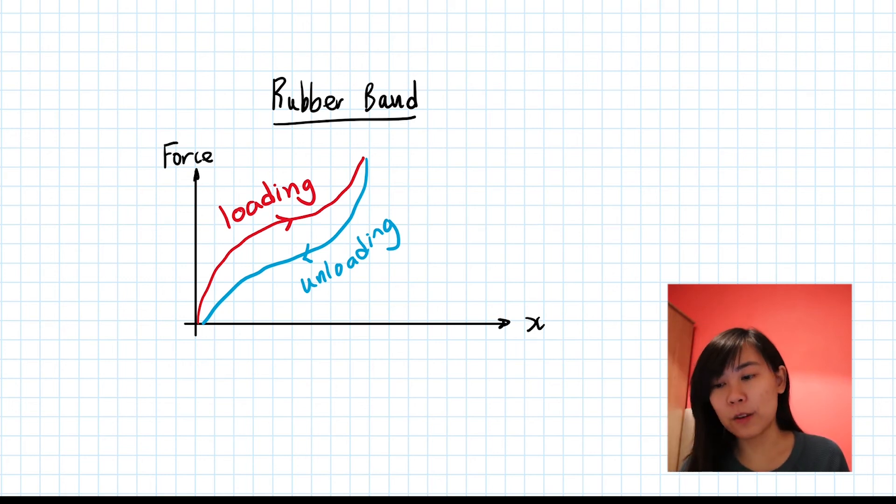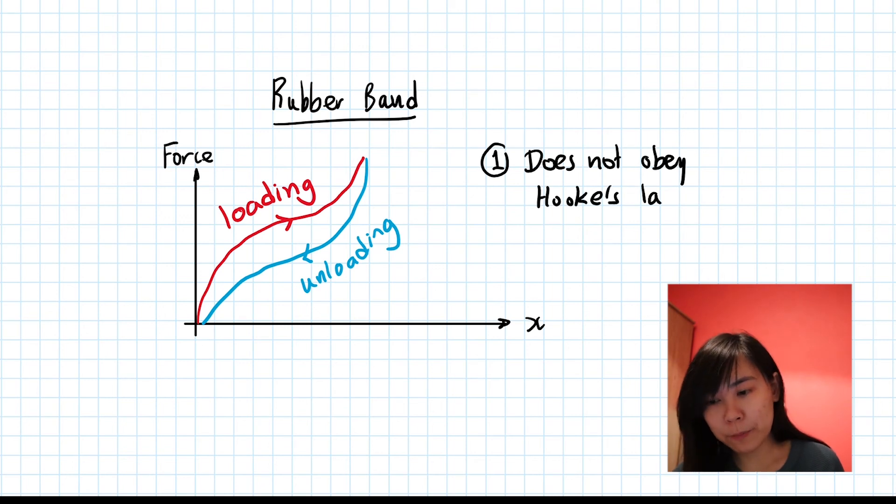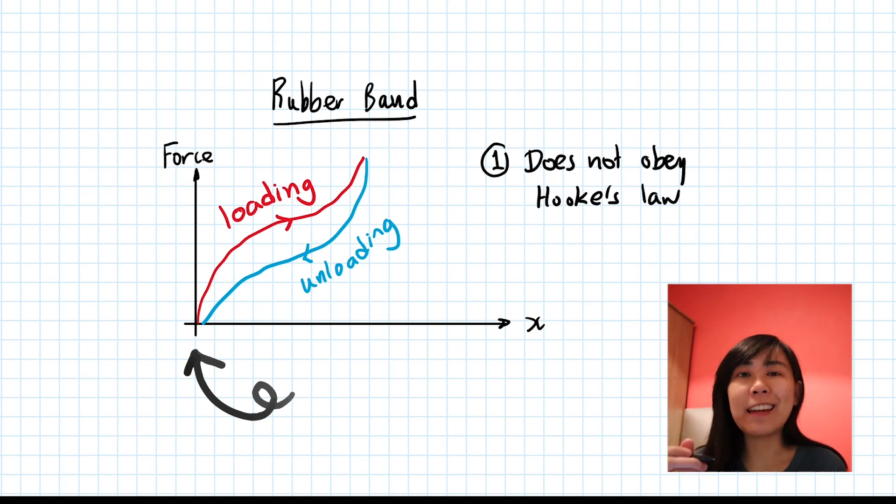There are two main things we can deduce from this graph. First of all, the curve tells us that it does not obey Hooke's Law. And secondly, after unloading or unstretching the rubber band, it's gone back to the origin. So we can say that it is elastic.